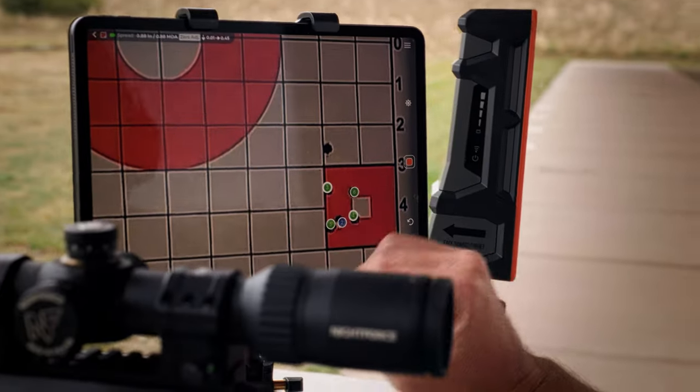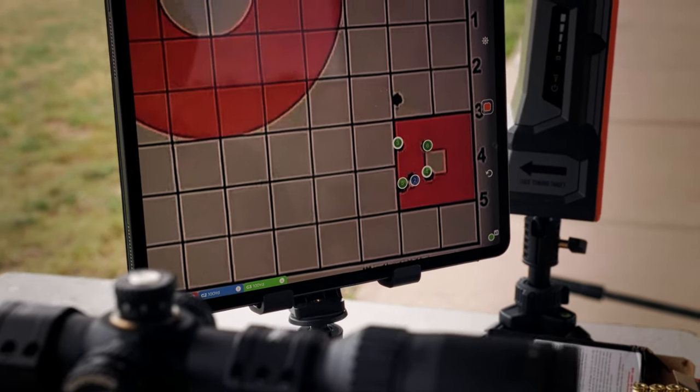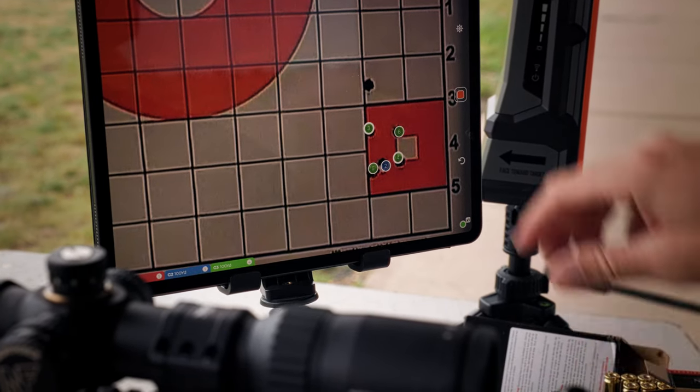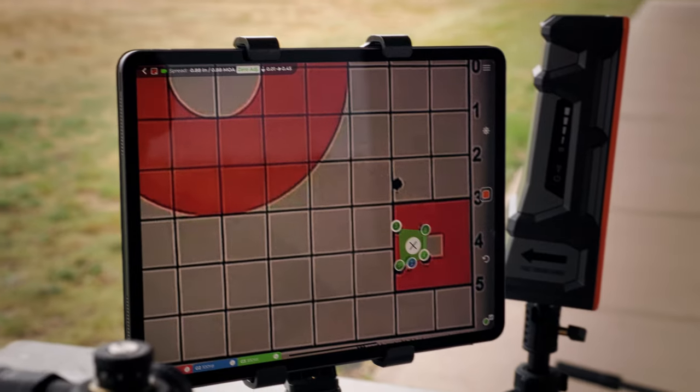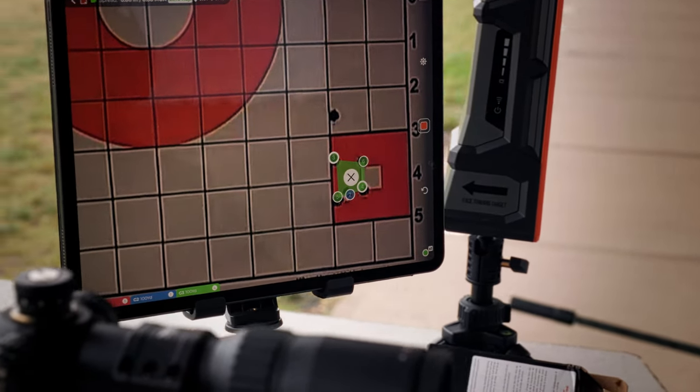Simply you can go in there and mark it again, and so now we've got our group. We can hit the zero adjust again and now we can see where the center point of that group is now.